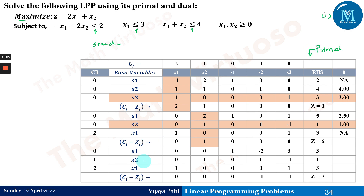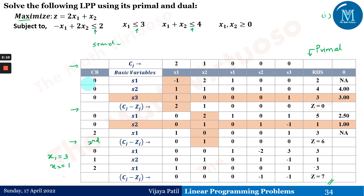After the initial iteration, the first iteration, and the second iteration, we received the answer in the second iteration. We check that all cj minus zj values are greater than or equal to zero — that's why the table terminated after the second iteration. Reading the last table, x1 equals 3 and x2 equals 1. We have two variables, so we need not consider s1 (which is 3). The result is z_max equals 7 for this primal.